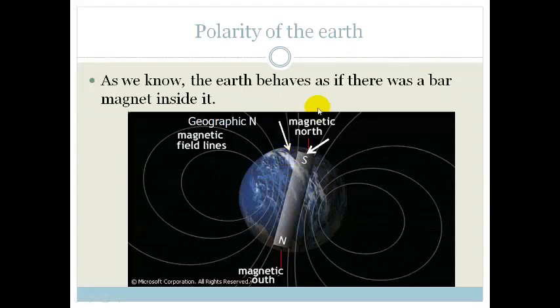As we know, the Earth behaves as if there is a big bar magnet inside it. So it is actually acting like a big bar magnet, and these are the field lines around this bar magnet.